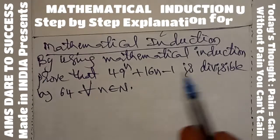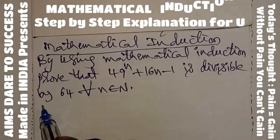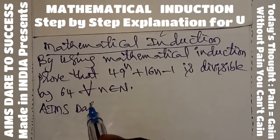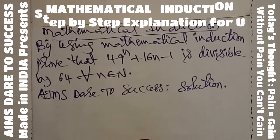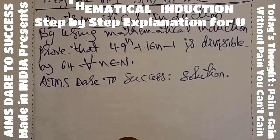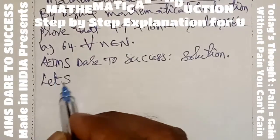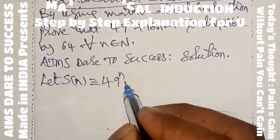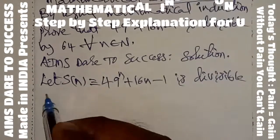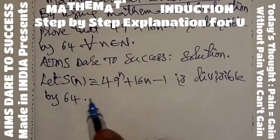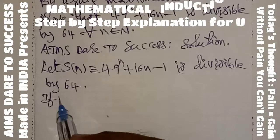So what is the question? By using mathematical induction, prove that 49 power n plus 16n minus 1 is divisible by 64 for all n belonging to N. I wanted to explain the solution with a neat and step-by-step explanation. Now I wanted to write the given value as S of n is equal to: 49 power n plus 16n minus 1 is divisible by 64.